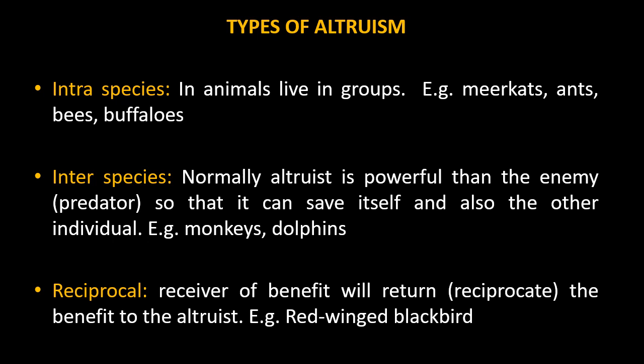Intraspecific altruism is found in animals which live in groups in society — in most animals like meerkat, ants, bees, and buffaloes. We know about the sterile workers of ants and bees, and also in herds of buffalo how the leaders and sometimes the mother risk their lives to encounter predators and save the cubs and other members of the herd. So intraspecific altruism normally occurs between individuals that live in groups.